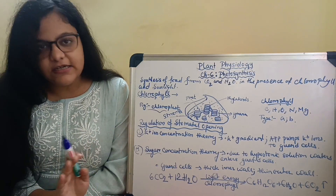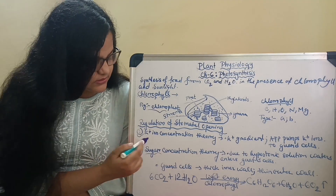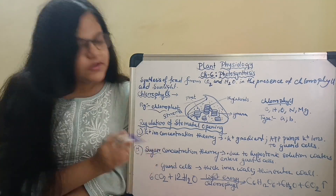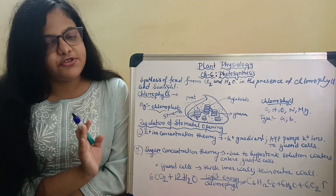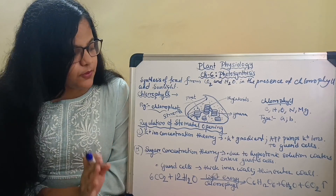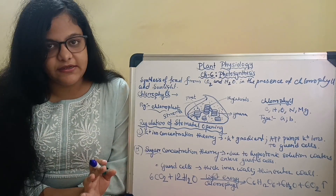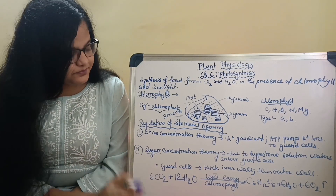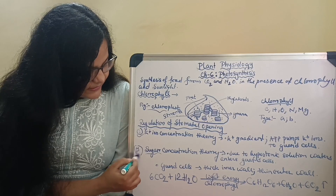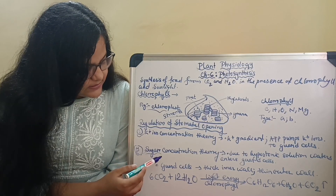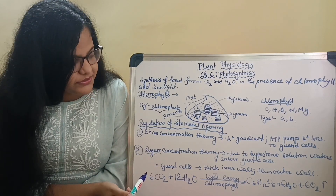As a result the guard cells become flaccid and close. This was the simple concept of K+ ion concentration, which is based upon the K+ ion gradient. Now the second theory deals with the sugar concentration.